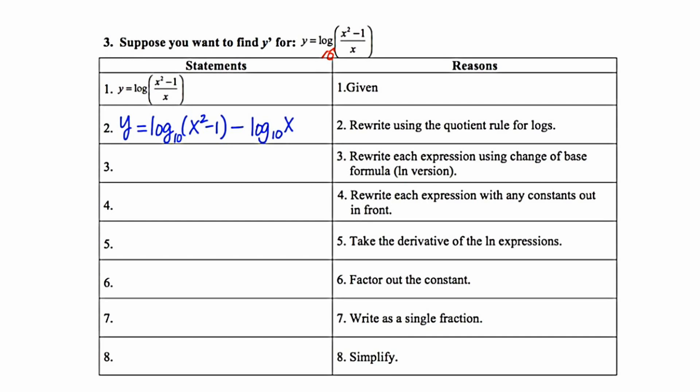Step 3 says to rewrite each expression using the change of base formula using the natural log version. So just as a reminder, when you're implementing the change of base formula, you do have the option of writing it as the ratio of logs or the ratio of natural logs. You always want to go in the route of natural logs in a calculus class because we just have more rules to use for natural logs. So I'm going to go ahead and create those ratios for each of these terms.